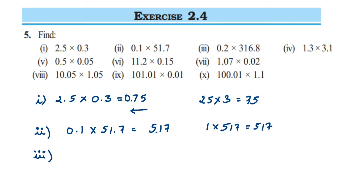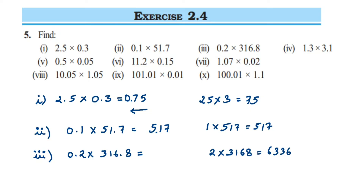The third question is 0.2 multiplied by 316.8. We multiply 2 and 3168, which equals 6336. Now placing the decimal: after the decimal we have one digit in the first number and one digit in the second, so total two digits. Counting two digits from the right — 6, 3 — we place the decimal, giving 63.36.